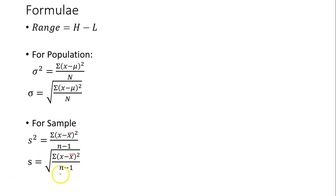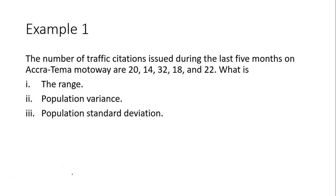Let's see how to apply the formulas with some examples. Example one: the number of traffic citations issued during the last five months on Accra-Kumamoto Way are 20, 14, 32, 18, and 22. Find the range, the population variance, and the population standard deviation.